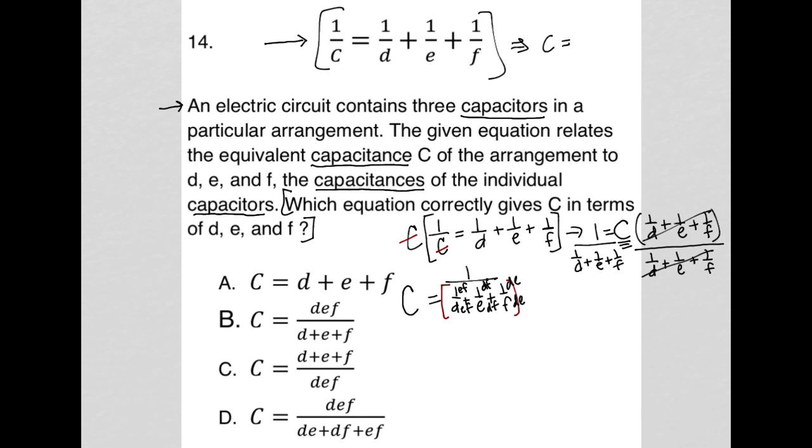I can get away with doing that because in essence, I'm multiplying by 1. EF over EF, DF over DF, DE over DE. So I'm not really changing anything. So let's see what happens now. Now I have C equals 1 over EF over DEF plus DF over DEF plus DE over DEF.